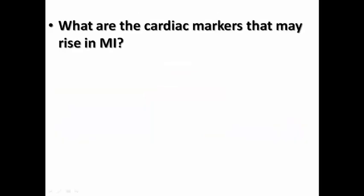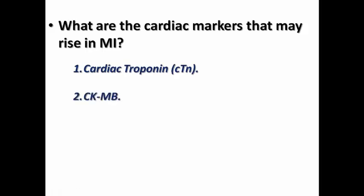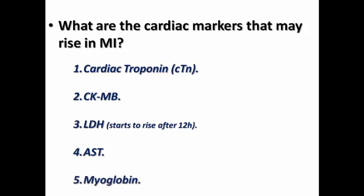So what are the cardiac markers that may arise in MI? Cardiac troponin is the most famous and most specific. CKMB is the second most common marker used in clinical practice. We also have LDH, which usually starts to rise after 12 hours, AST rather than ALT because ALT is specific for the liver, but AST is not specific for the liver so it can rise in MI, and myoglobulin.